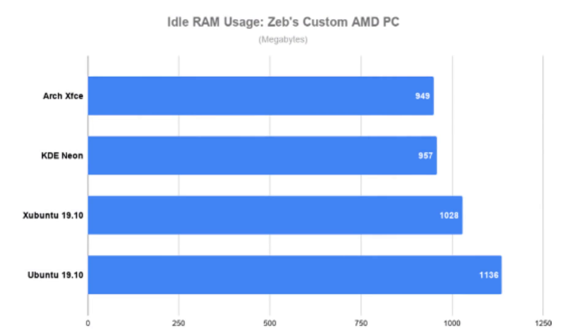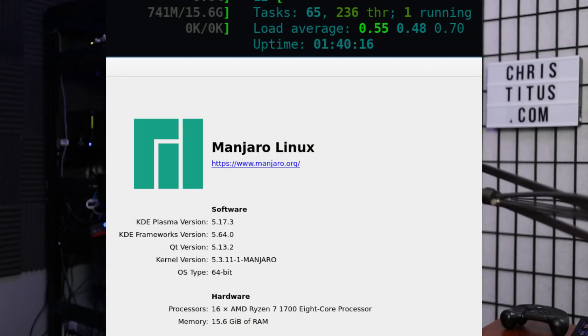Zeb from Destination Linux also ran some comparable tests. On his tests, XFCE did win out in almost all of them. You can see Arch XFCE getting about 949 megabytes of usage, KDE Neon getting 957, XFCE using 1028, and then regular Ubuntu using 1136. So that gives you the idle range. With KDE Neon being on KDE 5.17 at the time of writing, you could probably go to Kubuntu or the KDE spin of Manjaro. I know because I have that on my production machine — it uses 5.17 — and you'll see these results. Vanilla Ubuntu with GNOME is probably a couple hundred megabytes higher than most of the other environments.